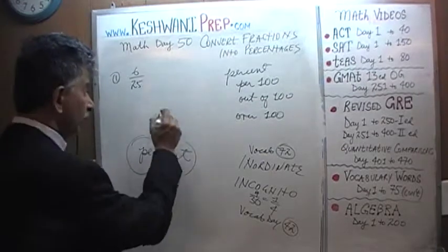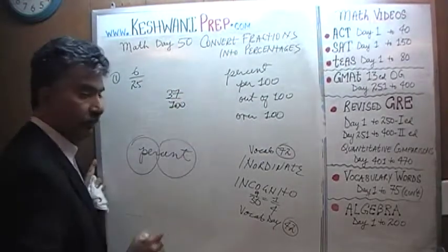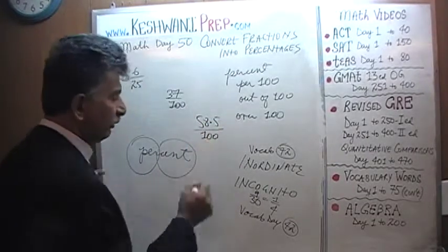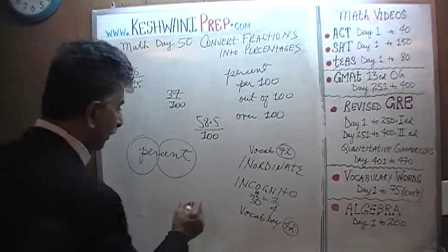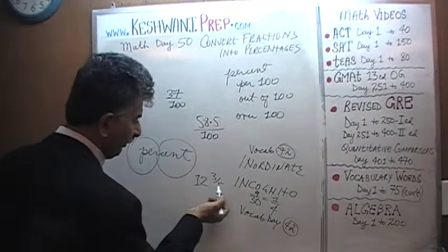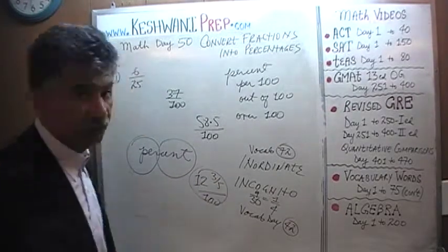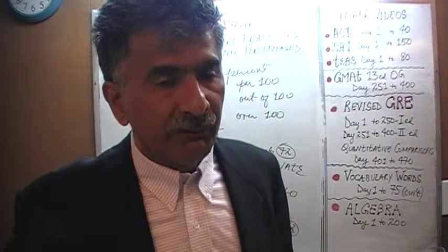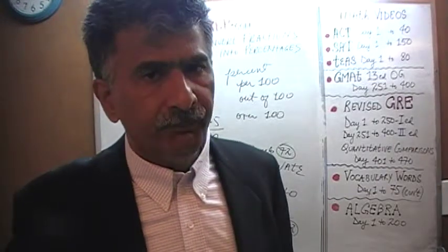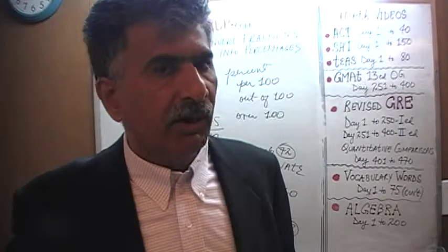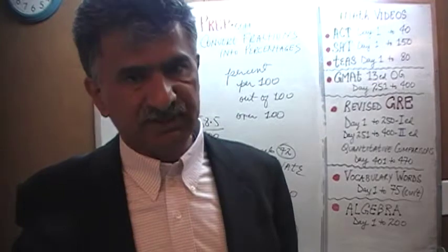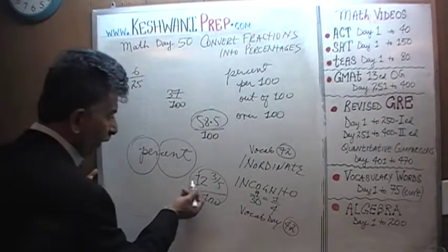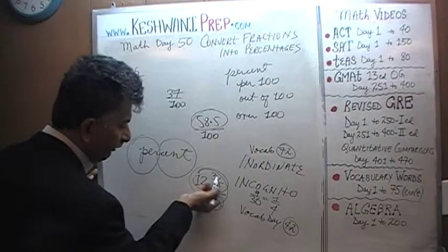For example, if someone says 37%, well 37% means 37 over 100. If someone says 58.5%, that in fraction form is 58.5 over 100. If someone says 12 and 3/5 percent, that is the same as 12 and 3/5 divided by 100, because percent means out of 100. So if you want to convert a given fraction into its percentage form, our job is to get 100 in the bottom as quickly as possible. As long as you have 100 at the bottom, whatever you see on top is the percentage.